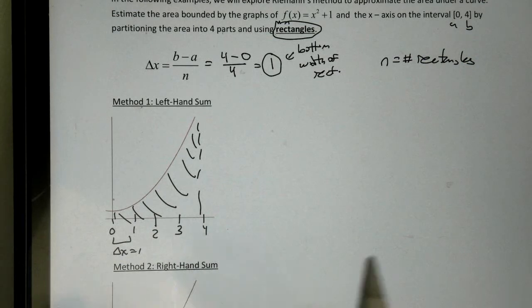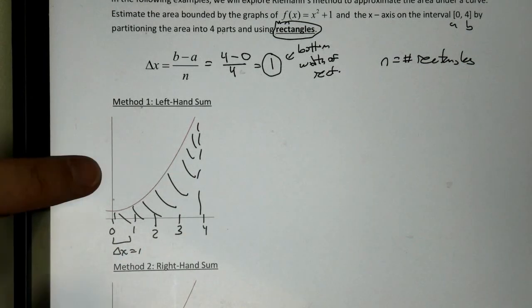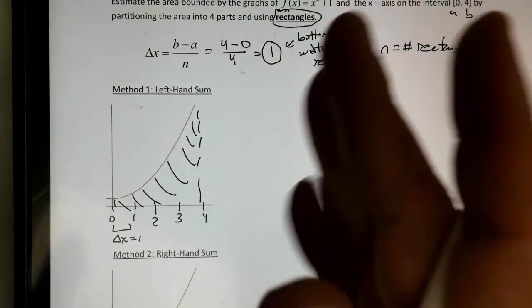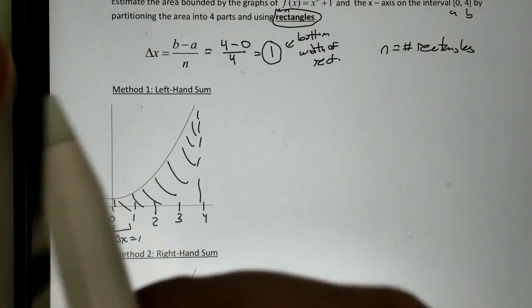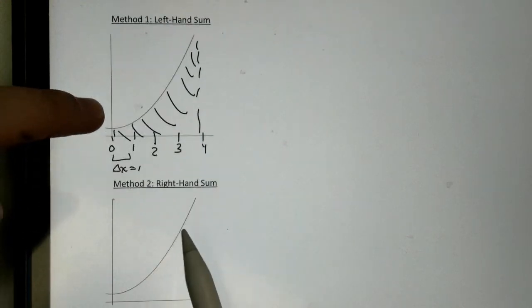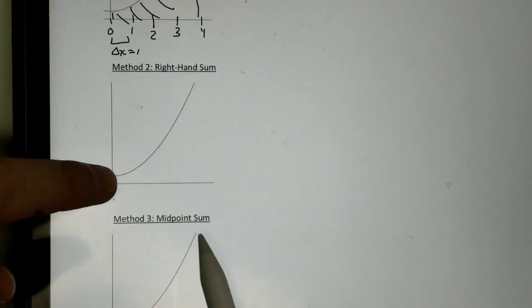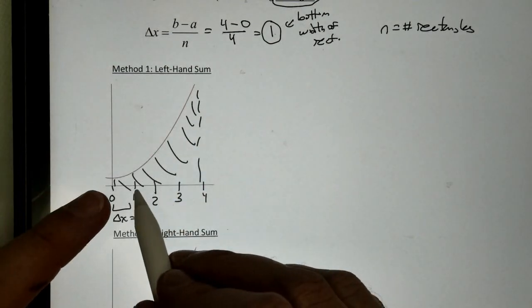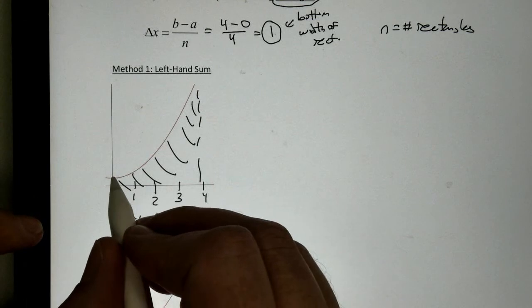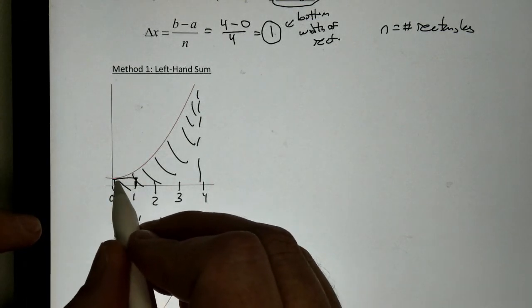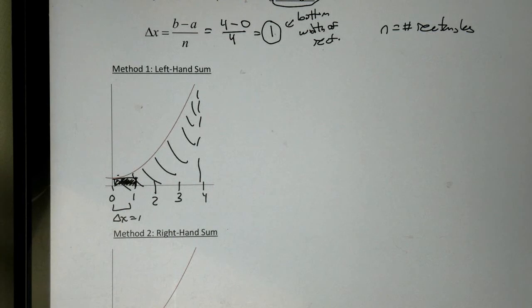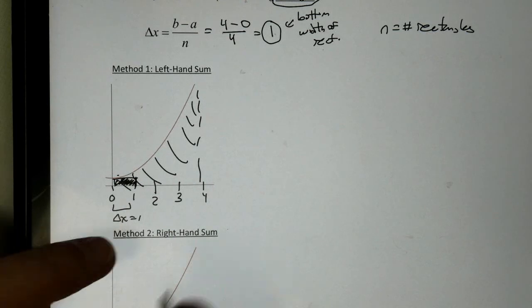Then, he says, now we've got to get the height of our rectangle. Well, to get the height of the rectangle, we're going to use, in this case, what's called a left-hand sum. A left-hand sum says, between 0 and 1, which number is on the left? 0. So, that says, I'm going to make a rectangle at 0, like so. And, I'm going to look at that rectangle. I'm going to use that area right there.